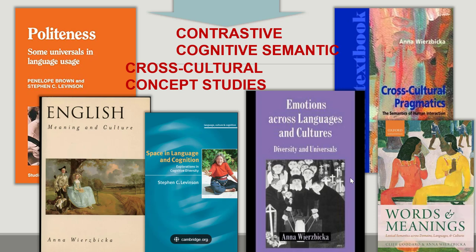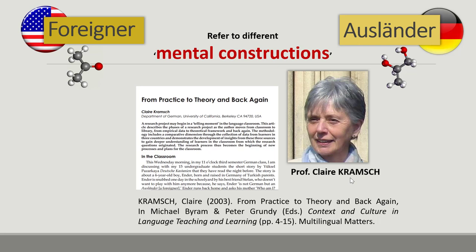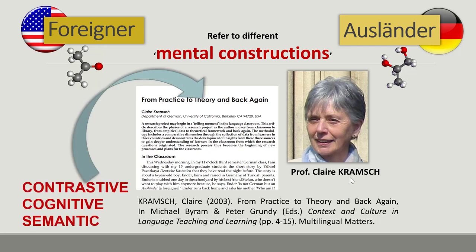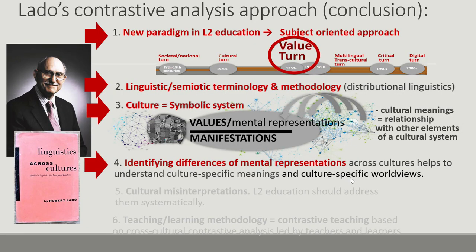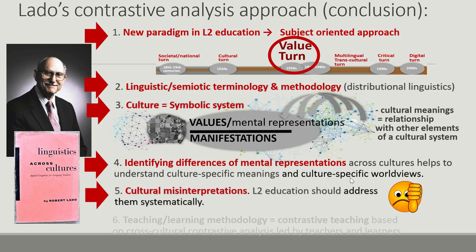These research fields decode culture-specific meanings of universal concepts by contrasting different languages, studying cultural variations in concepts of emotion, time, space, movement, basic social categories, politeness, and more. For example, Clara Kramsch, who explored different mental constructions of the concept of foreigner in American and German cultures, used the theoretical framework of cognitive semantics in her contrastive research. Another important contribution of Robert Lado is the notion of cultural misinterpretations resulting from the interference and negative transfer between cultural symbolic systems. Lado argued that cultural misinterpretations should be central to second language education, just as linguistic errors induced by the mother tongue are.